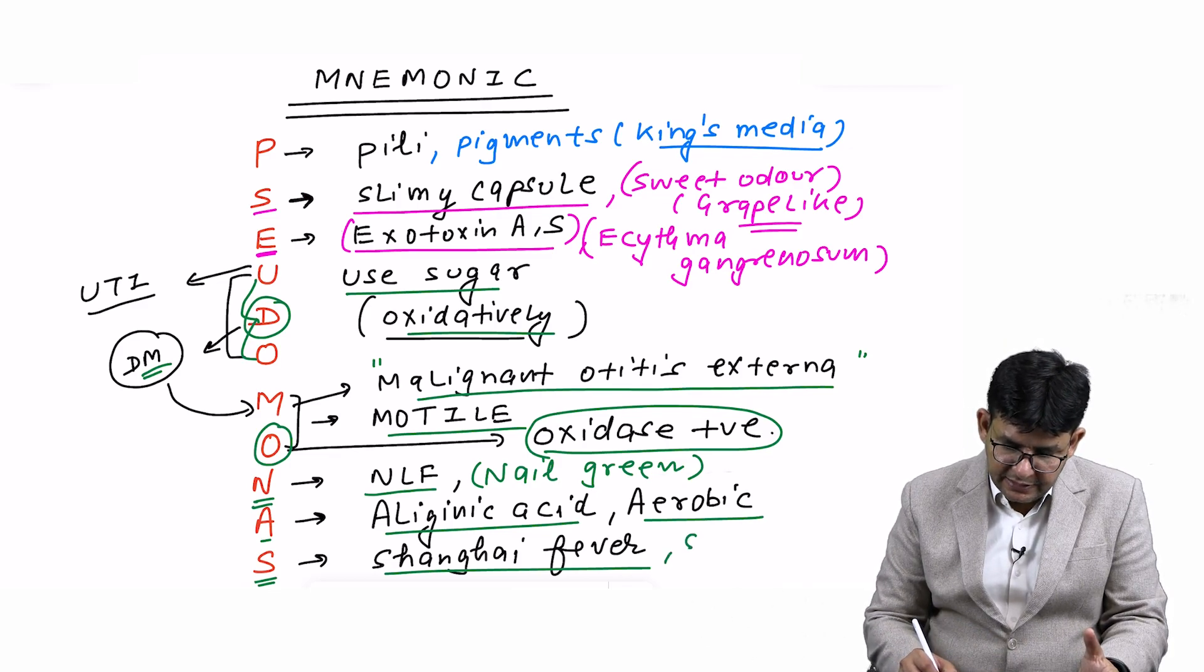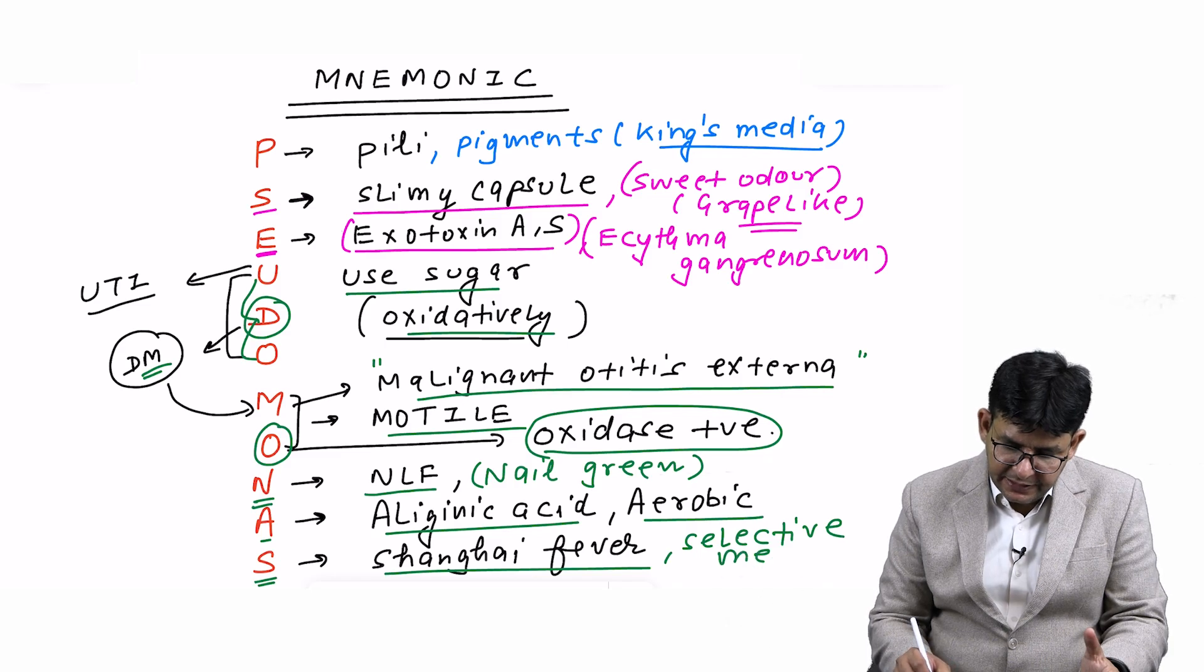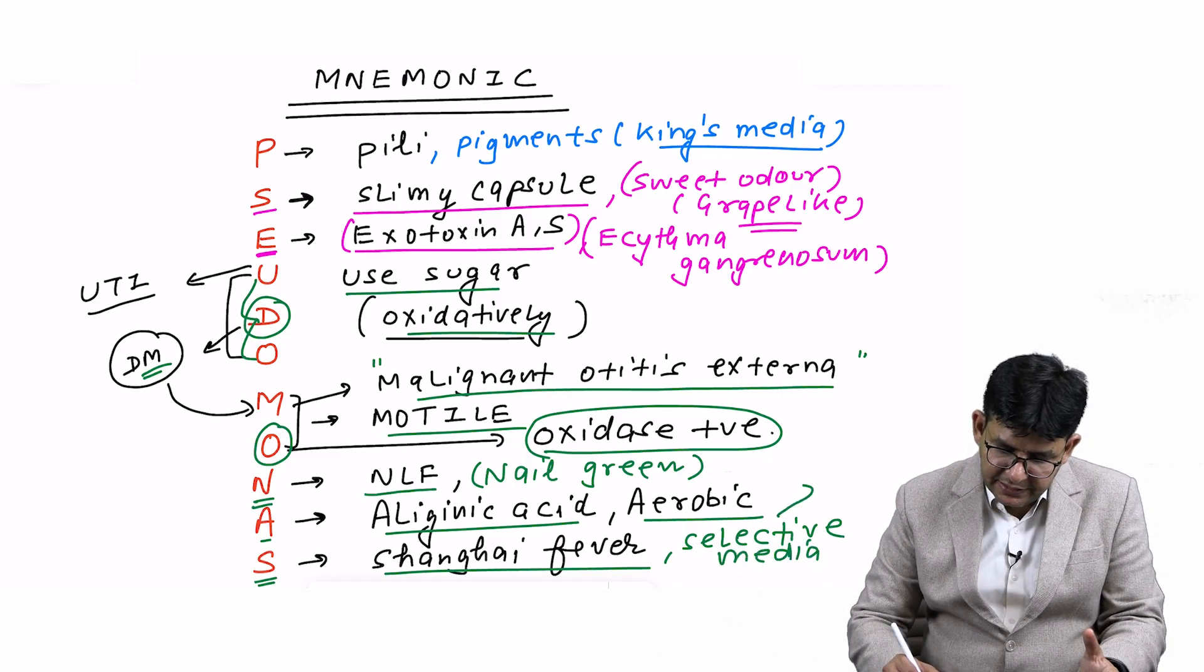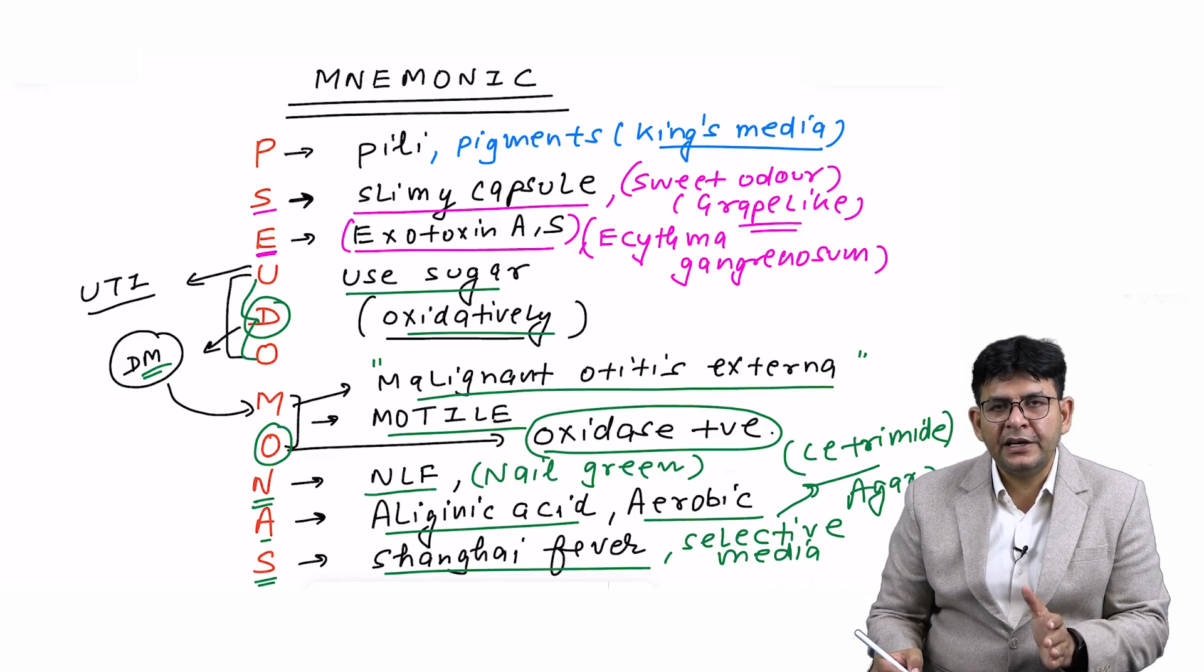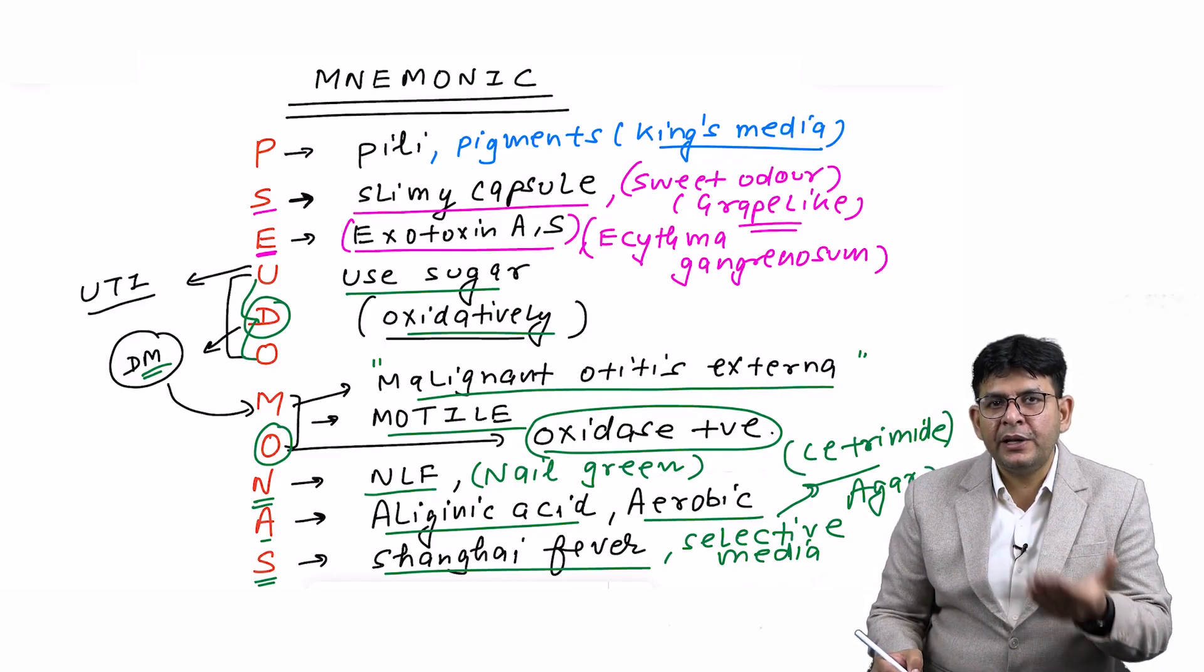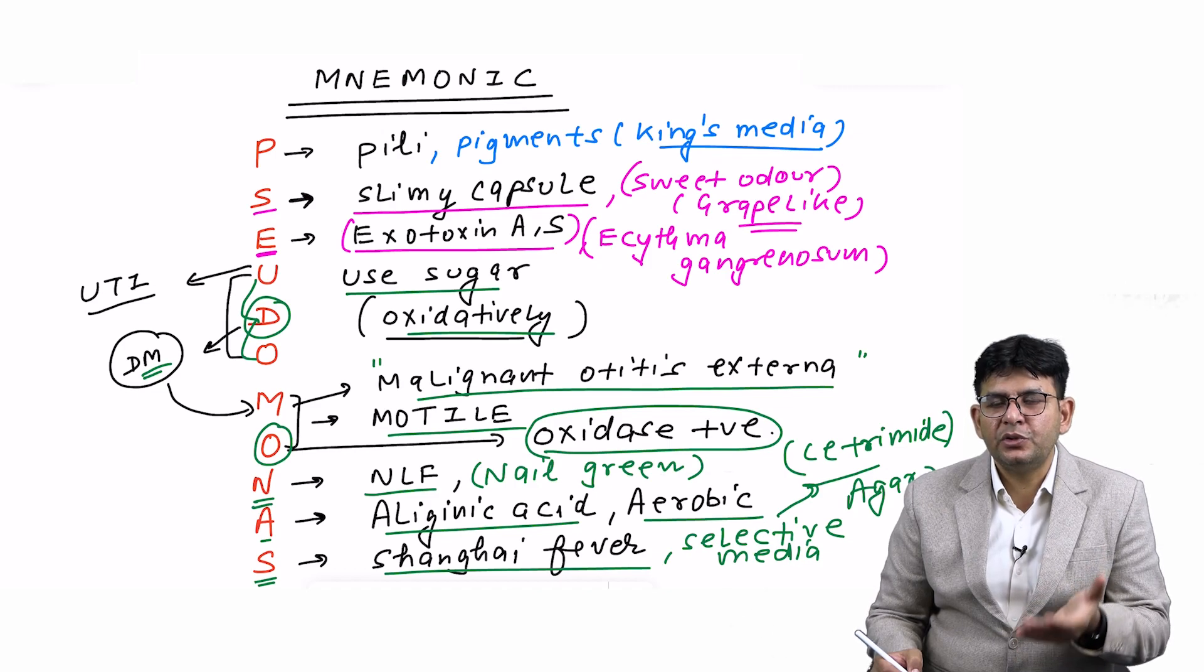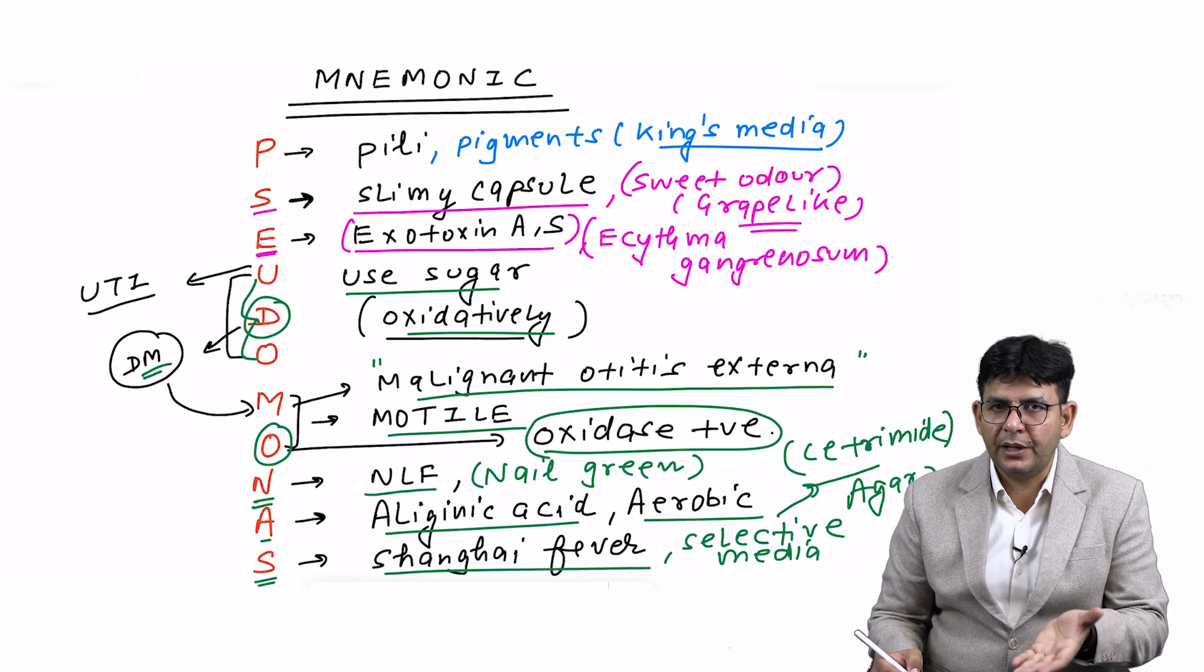If somebody asks you what is the selective media for it, the selective media is cetrimide agar. Cetrimide is a disinfectant, and it is capable of growing in the disinfectant, so the best selective media for it is cetrimide agar.